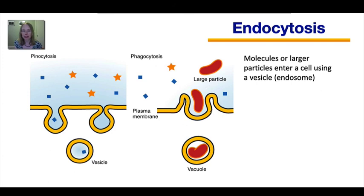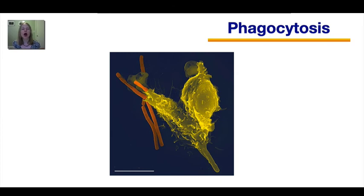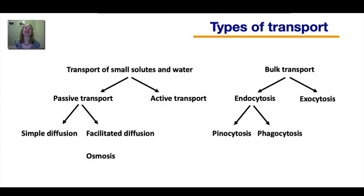Phagocytosis occurs when cells engulf large particles, which can sometimes be entire bacterial cells. In your body, a special type of white blood cell can perform phagocytosis and functions in your immune system. This is how white blood cells help defend you against bacterial infections — they literally engulf those bacteria and digest them to destroy them. Here is a microscope image of a real white blood cell caught in the act of engulfing a bacterial cell.